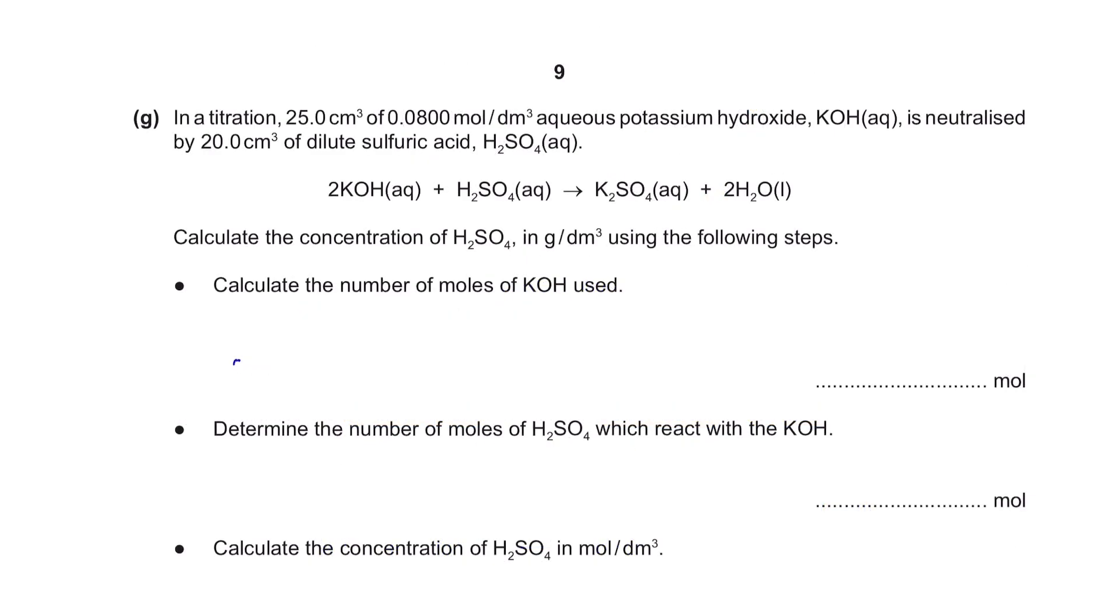Question G: In a titration, 25 cm³ of 0.08 mole/dm³ aqueous potassium hydroxide is neutralized by 20 cm³ of dilute sulfuric acid. You are given your chemical equation. Calculate the concentration of H2SO4 in grams per dm³ using the following steps. The first step is to calculate the number of moles of potassium hydroxide. The information given for potassium hydroxide is the volume and concentration.